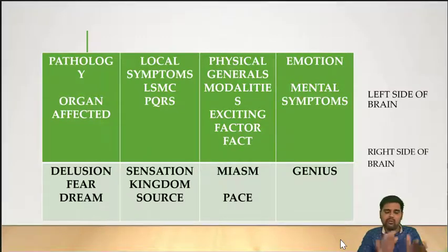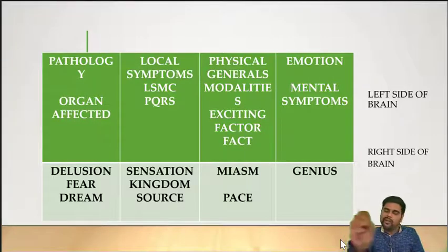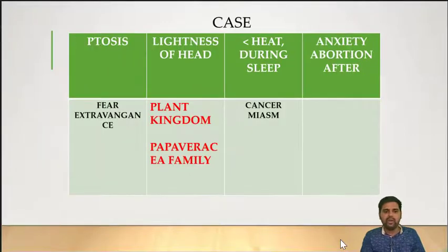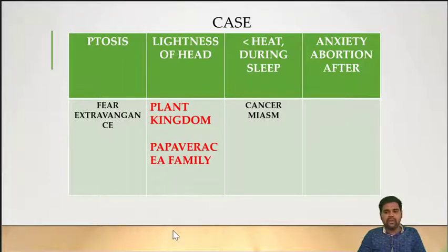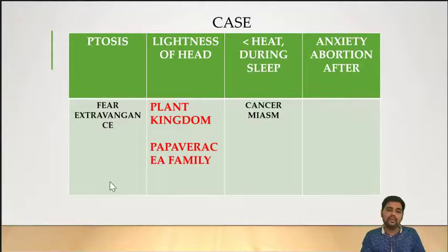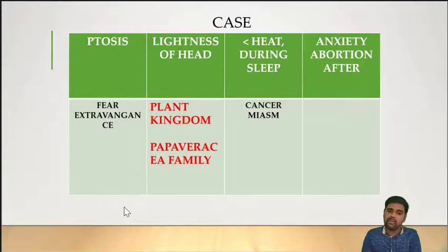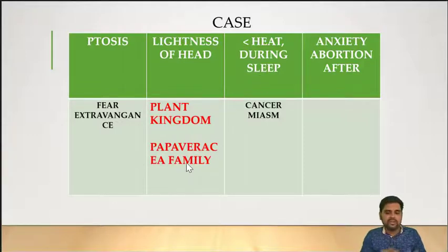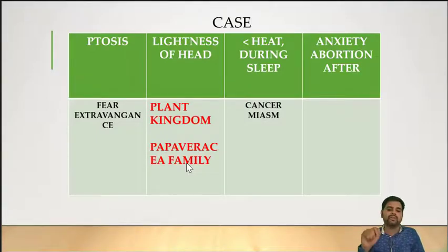What we have to do is select one box out of these eight which is very well-marked, and then try to connect it with all the other seven boxes. For example, in an earlier case of mine — a case of ptosis — the major well-marked symptom was fear of extravagance: 'Kya hoga, doctor?' It was fear beyond the normal level, which pointed to a single medicine. Even when looking for general or peculiar symptoms, I connected this with all seven boxes. You have to make one box an anchor and connect it with all the other seven boxes.